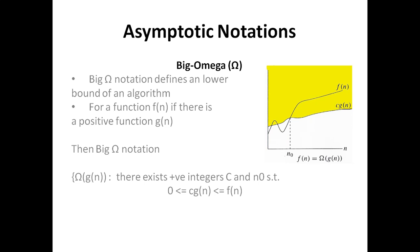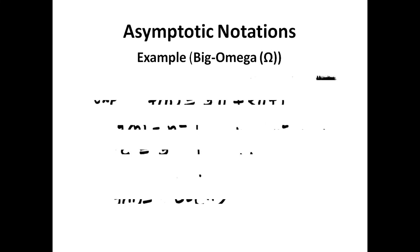We write f(n) = Ω(g(n)) if there exist positive constants c and n₀ such that c·g(n) is always less than or equal to f(n). That means the execution time of the program will always be greater than or equal to c·g(n) for any number of inputs.